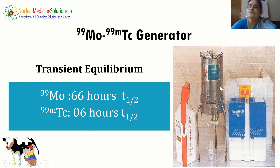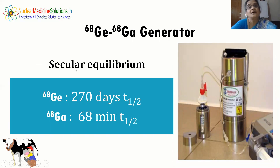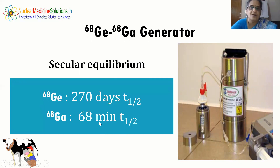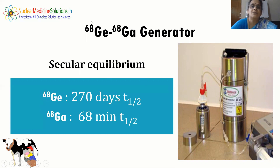The Mo-99/Tc-99m generator has evolved from manual to automated forms. The Ge-68/Ga-68 generator follows secular equilibrium due to Ge-68's very long half-life, while Ga-68 has a half-life of only 68 minutes. Ga-68 is a PET radionuclide (positron emitter) with potential to become a workhorse PET radionuclide if radiolabeling is optimized. Ge-68 can also serve as a QC source for PET imaging systems, using the positron emission from its daughter directly.